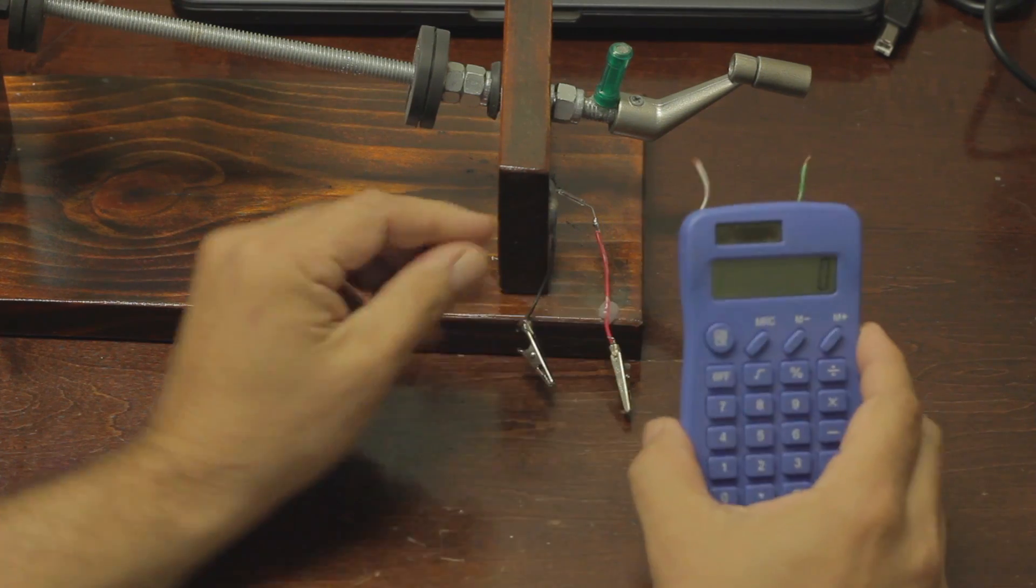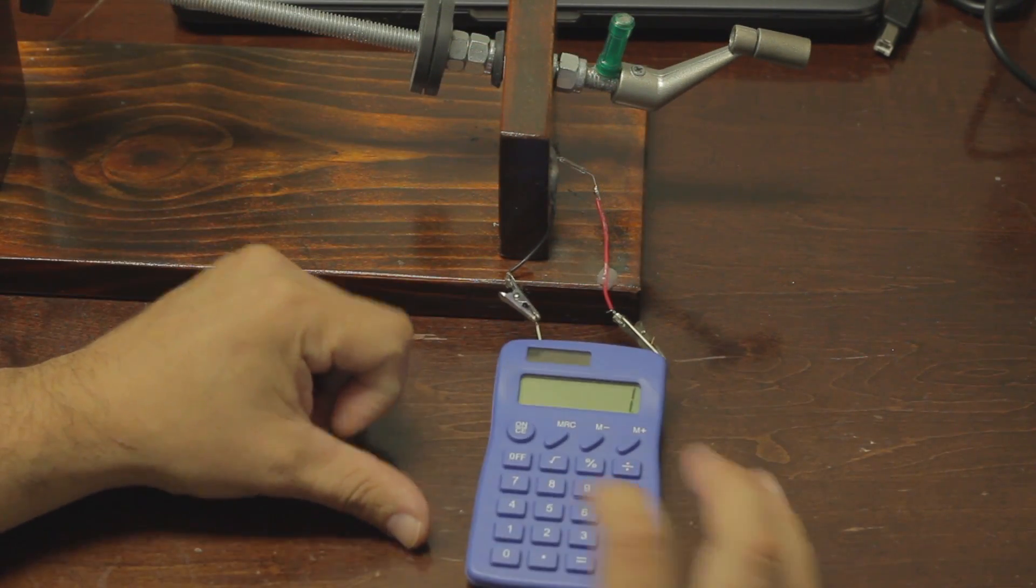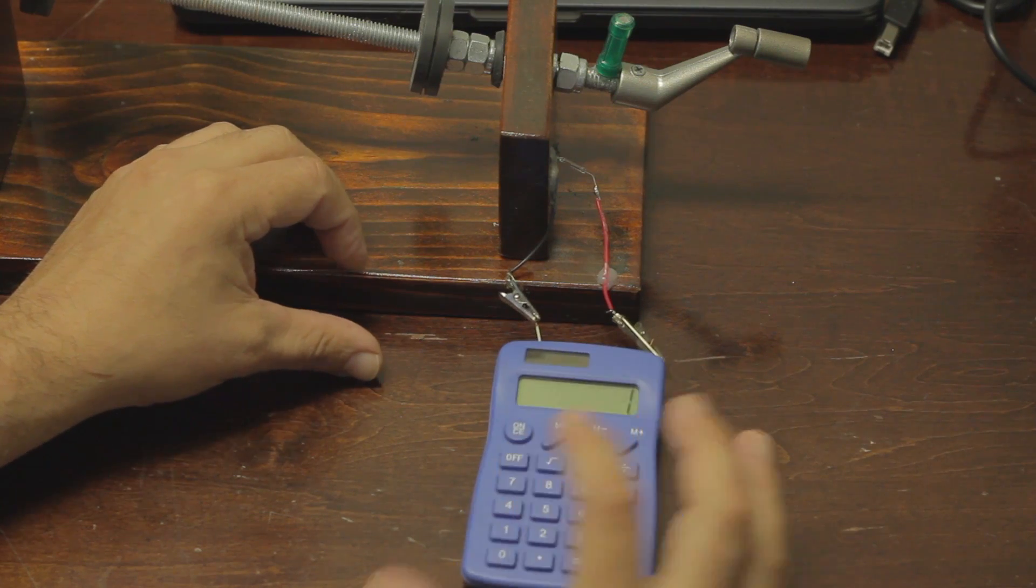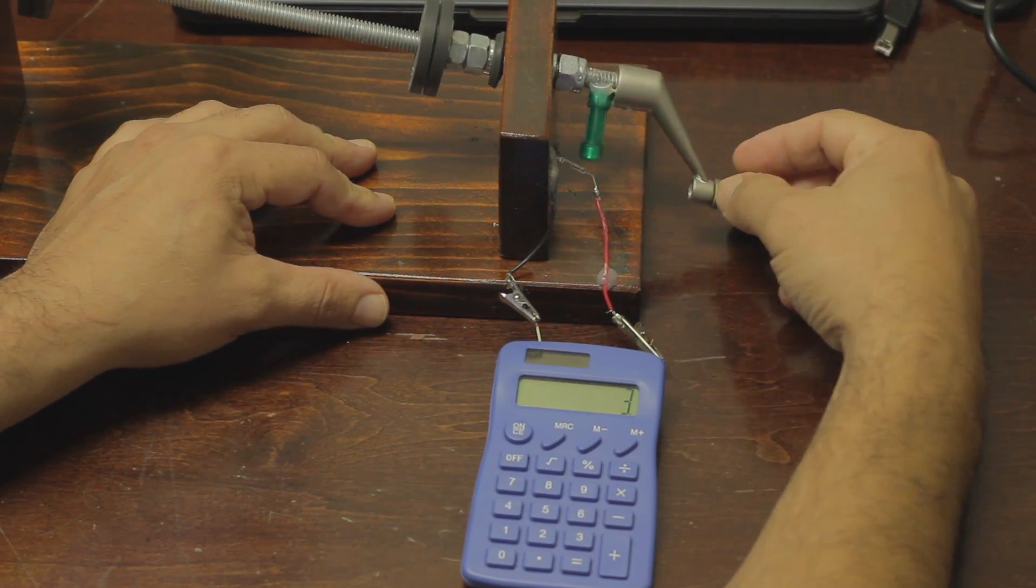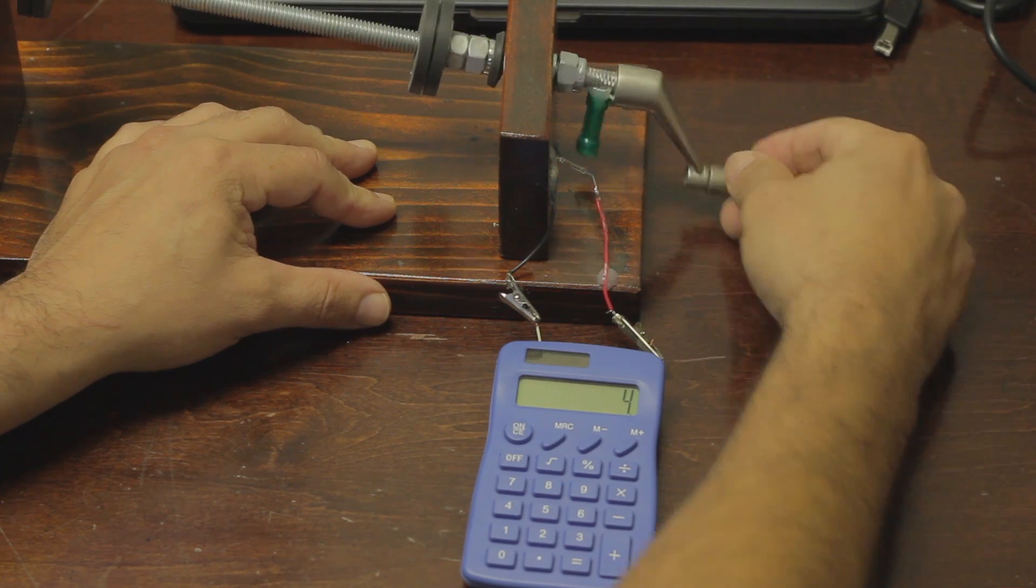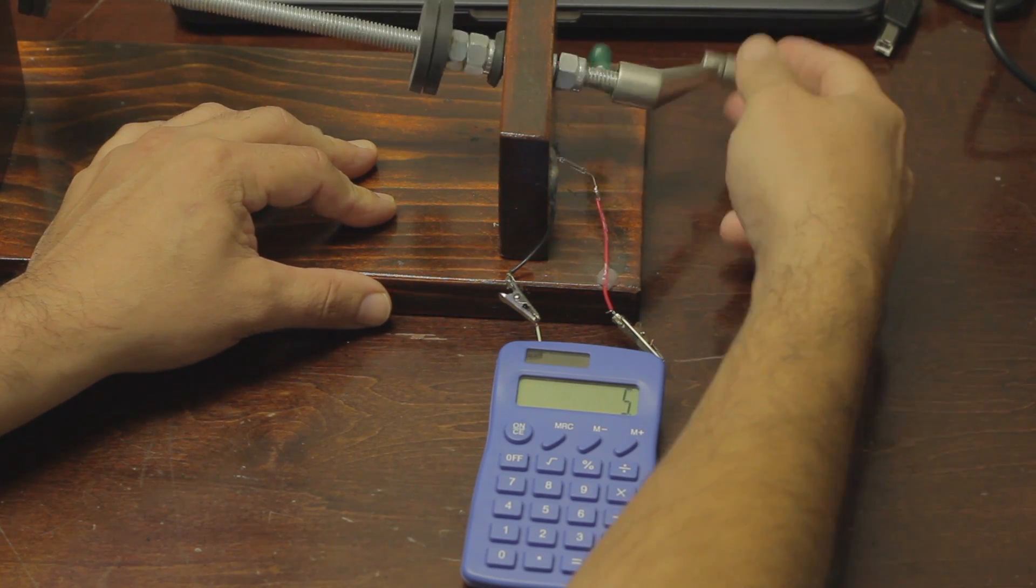Let's hook up the calculator so you can see exactly how this works. You have to initially enter 1 plus 1 in order for the counter to work. Now, every time the magnet comes within range of the reed switch, the equal button on the calculator is activated.